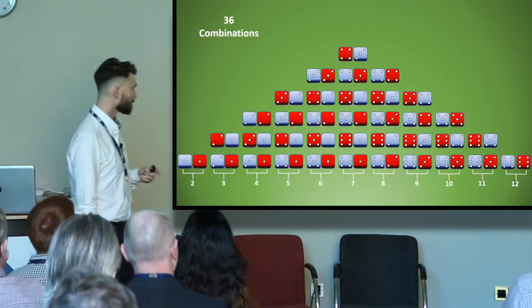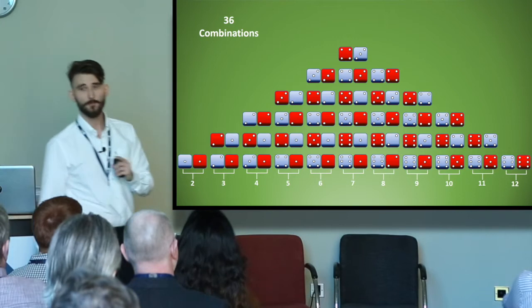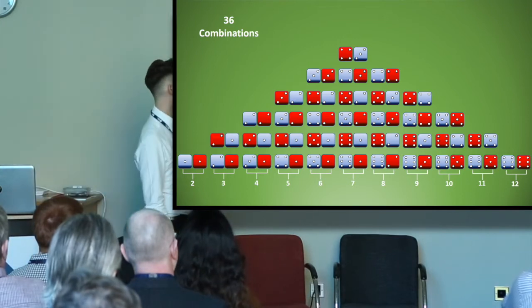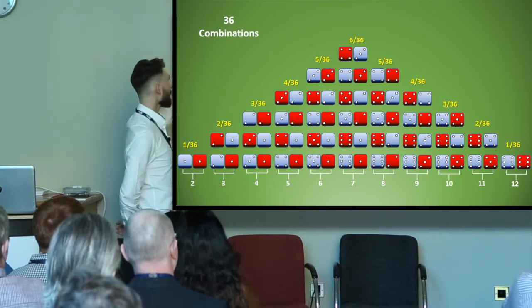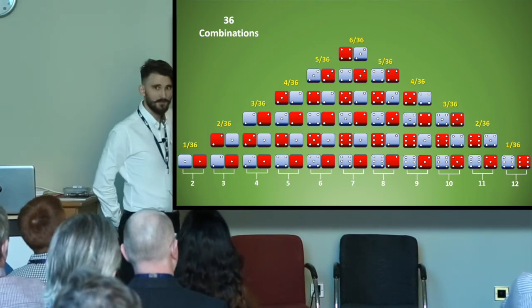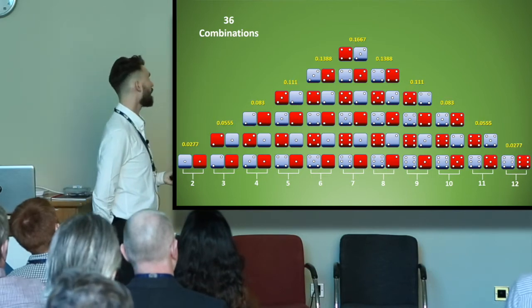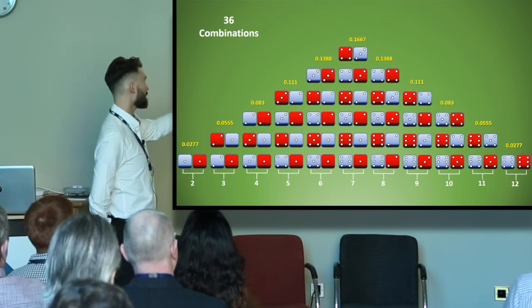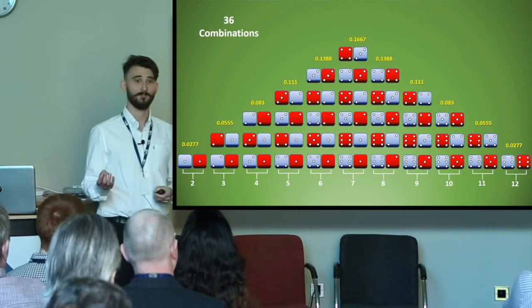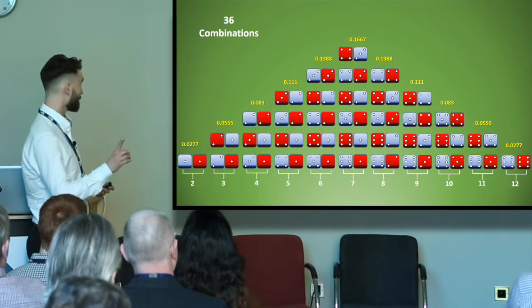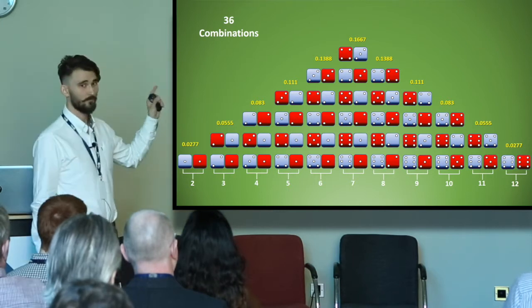Well the answer is no, and the reason is, as I've shown here, there are 36 total combinations that can make up each number. You can see there's only one that makes a two, whereas there's six that can give you a seven. So we've got a one in 36 chance of rolling a two and about a 17% chance of rolling a seven. So if I was to ask you again, you'd probably choose a seven. But it's worth noting that there's an 83% chance that I will not roll a seven.